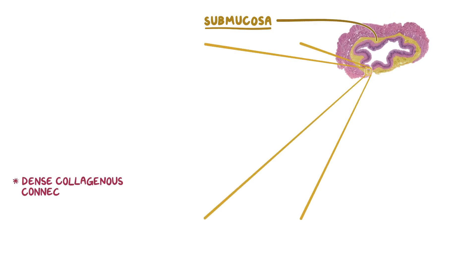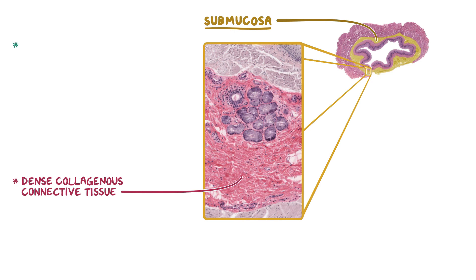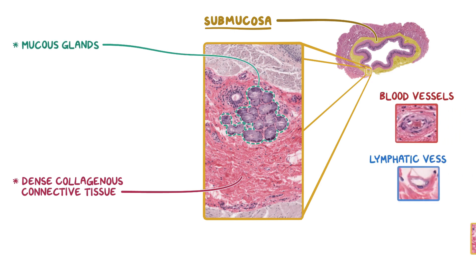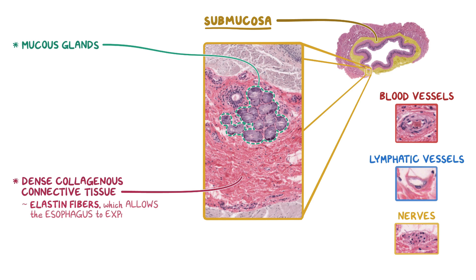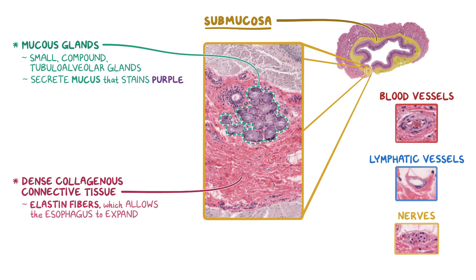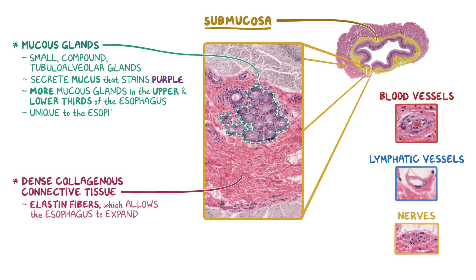The next main layer is the submucosa, which consists mostly of dense collagenous connective tissue that stains pink. But the submucosa also contains mucus glands, blood vessels, lymphatic vessels, and nerves. Within the connective tissue there are also elastin fibers, which allow the esophagus to expand when food passes through it. The mucus glands are visible here, and they are small, compound, tubulo-alveolar glands that secrete mucus that stains purple. There are typically more mucus glands present in the upper and lower thirds of the esophagus. The location of mucus glands within the submucosal layer is actually a unique feature specific to both the esophagus and the duodenum. The mucus is excreted through ducts that reach the mucosa's epithelium in order to help lubricate the surface.